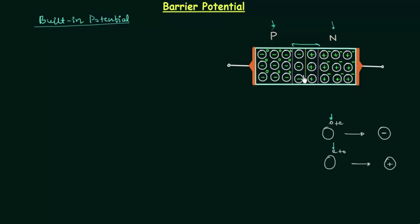This whole process is also called uncovering of immobile ions. When an immobile ion is paired with a hole or electron, charge neutrality is maintained. But when the hole combines with an electron or vice versa, uncovering of charge carriers takes place, leaving negatively and positively charged immobile ions. The layer of negative and positive immobile ions acts as a potential difference called barrier potential — it acts as a barrier to further movement of charge, as the positive layer repels holes and the negative layer repels electrons.